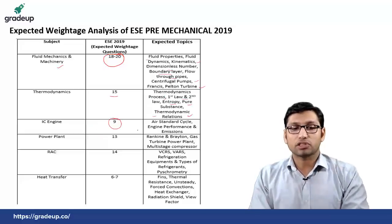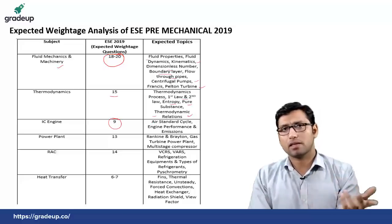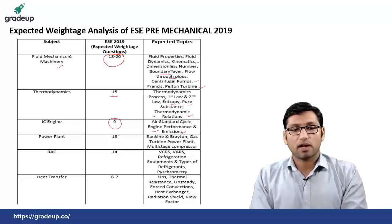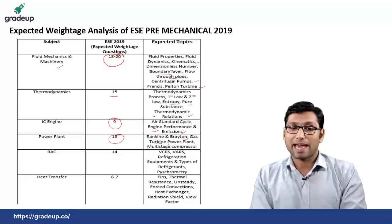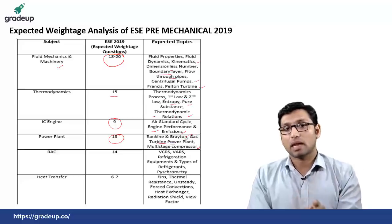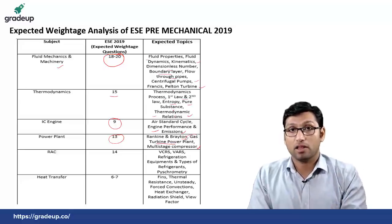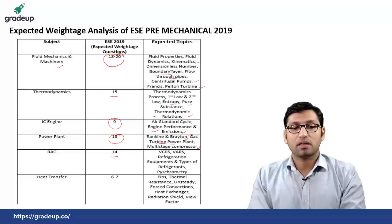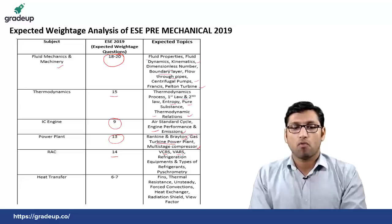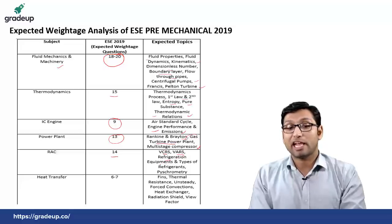From IC engine there can be 9 questions, again from standard cycle, engine performance parameter and emissions. From power plant there can be around 13 questions from Rankine cycle and Brayton cycle, gas turbine power plant and multi-stage compressor — these two topics were not asked in 2017 and 2018, so maybe this time these topics can be asked. From RAC there can be again 14 questions from VCRS (vapor compression system), vapor absorption refrigeration, refrigeration equipments, types of refrigerant and psychometry.